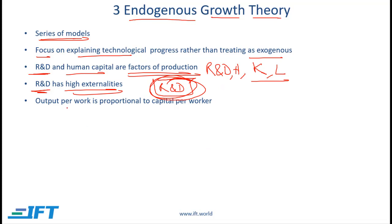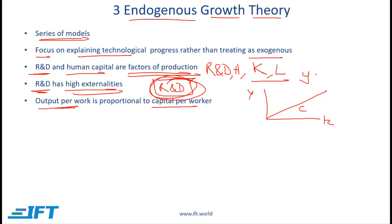With the endogenous growth theory, output per worker is proportional to capital per worker. If we have capital per worker on the x-axis and output per worker on the y-axis, we have a linear relationship with slope c, so output per worker equals c times capital per worker. This proportional relationship is important because in the neoclassical model we had diminishing returns, but here there are no diminishing returns.